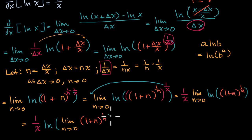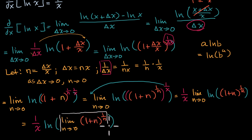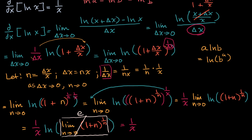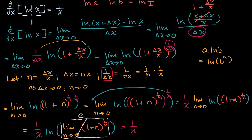Now this is exciting. What is inside the natural log here? Well, this is a definition of the number e. So that is equal to e. What's the natural log of e? Well, that's just one. So it's one over x times one, which is indeed equal to one over x — which is exactly the result we were looking for. The derivative with respect to x of natural log of x is one over x. Very exciting.